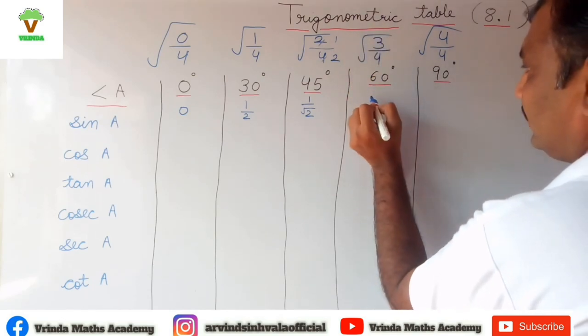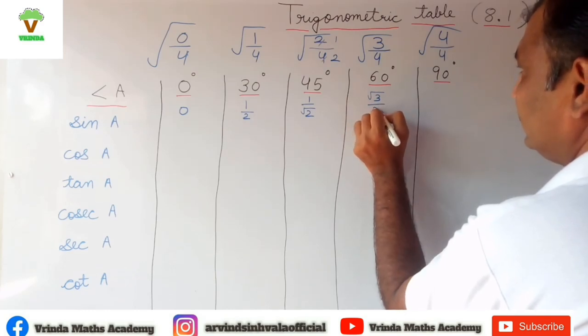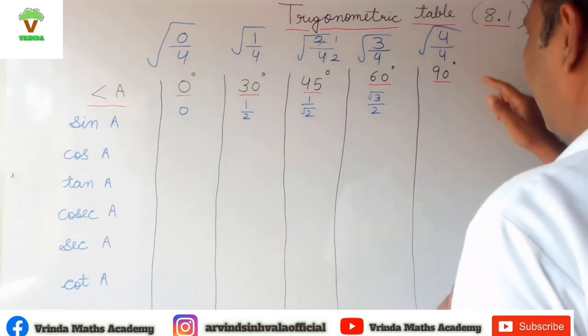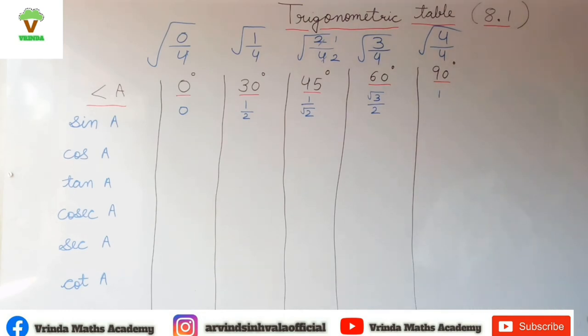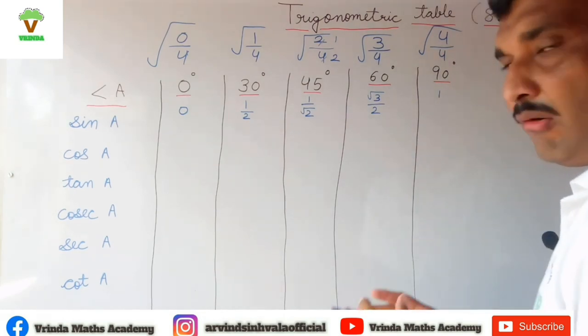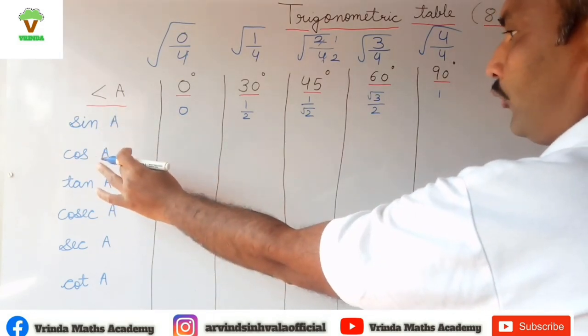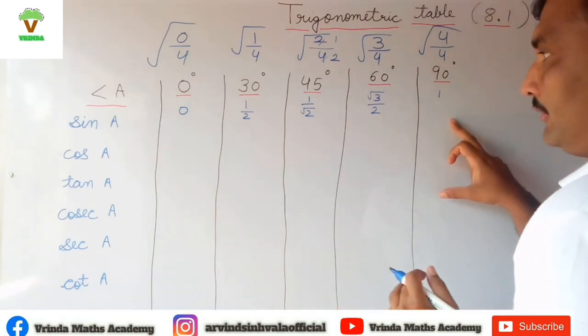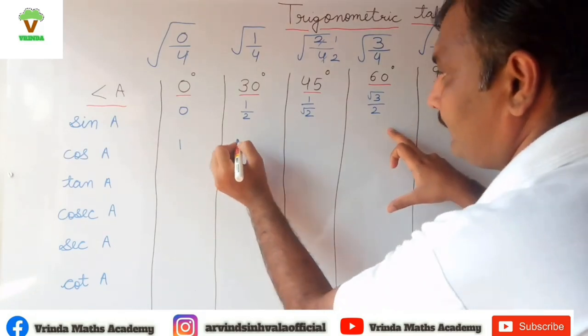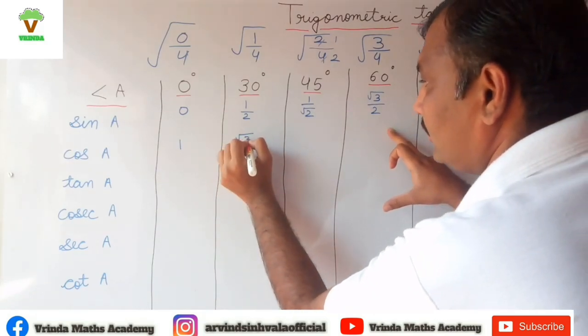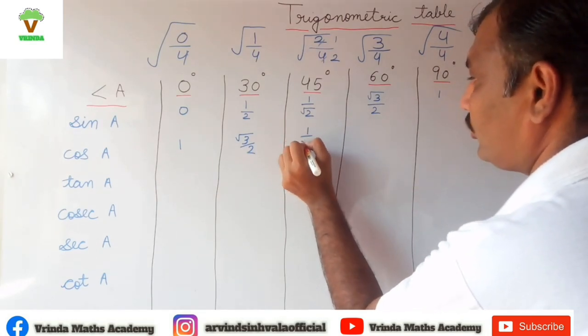Here, root 3 and root of 4 is 2. Here we have to divide 4 with 4 means 1, and root of 1 is 1. Now after writing the values of sine A, we have to write the value of cos A from backward. So first 1, then root 3 by 2, and 1 upon root 2.